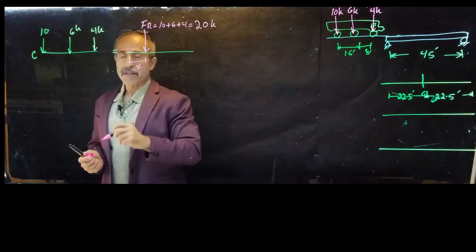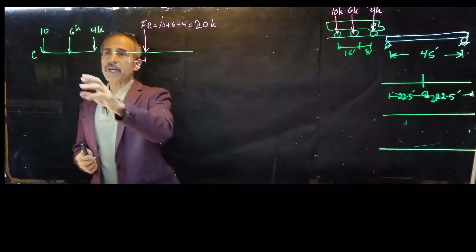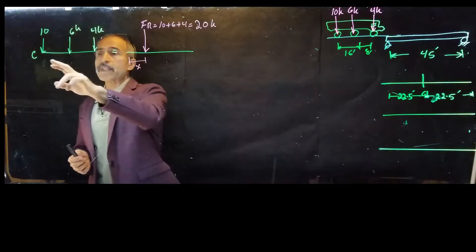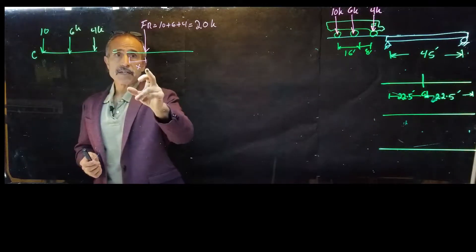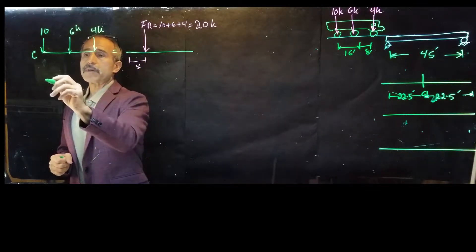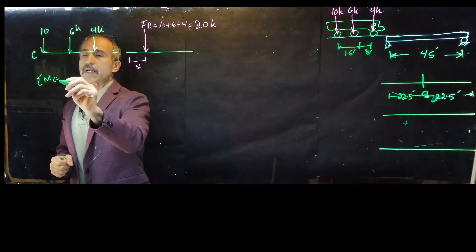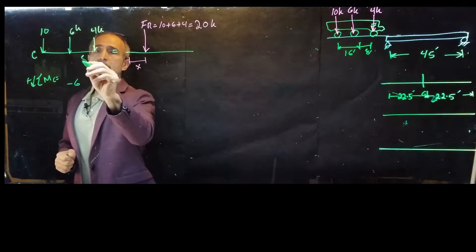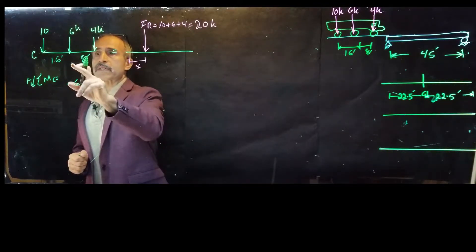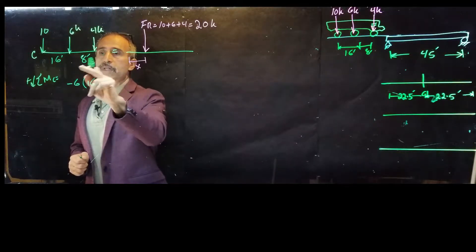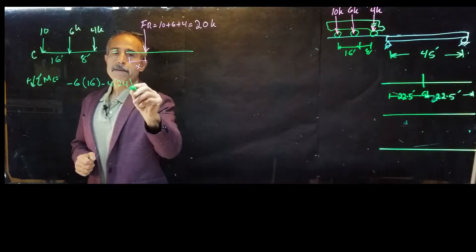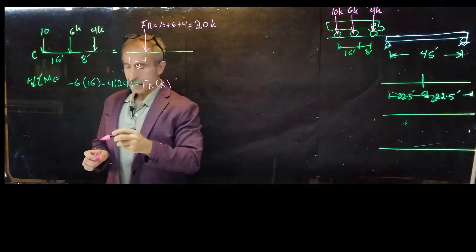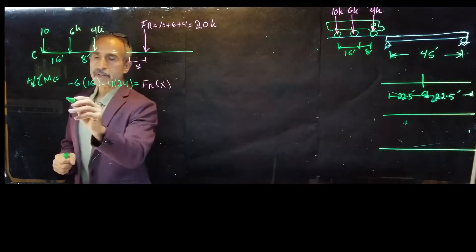To calculate that distance, we take a moment about point C. The summation of moments about point C — counterclockwise positive — gives us: minus 6 times 16, minus 4 times 24, equals R times x. Solving this equation, x comes out to 9.6 feet.